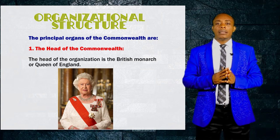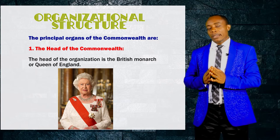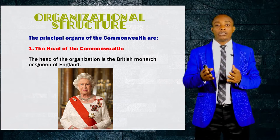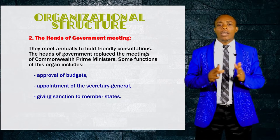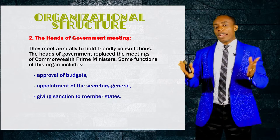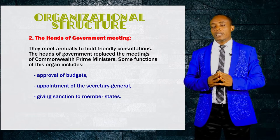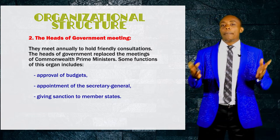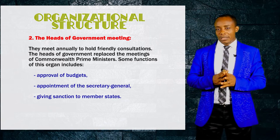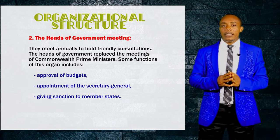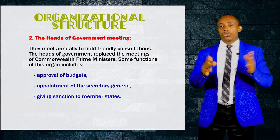The head of the Commonwealth is the British monarch, or the Queen of England, who is presently Queen Elizabeth II. The second organ is the heads of government meeting. Before this time, this was known as the meetings of the Commonwealth prime ministers. Some of the duties performed by these heads of government meetings include approval of budgets, appointment of the secretary general, and giving sanctions to member states. This body normally meets annually to discuss issues affecting the Commonwealth, and solutions are also provided from these meetings.